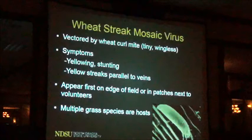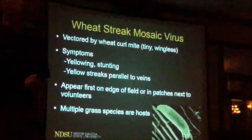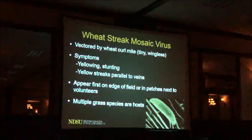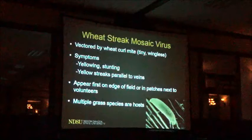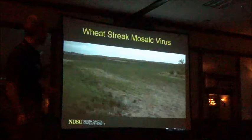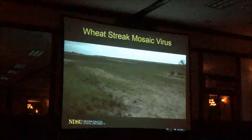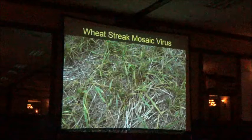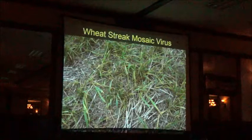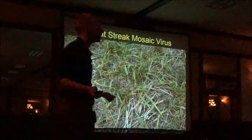The wheat curl mites overwinter in the crown of perennial grasses and also winter wheat. Multiple grass species are hosts, and all major cereal crops can be hosts, but wheat is the most susceptible. Here's a photo showing yellowing starting from a field edge and moving across the field. If you blow up those plants, you see the streaking, stunting—all coming into play. The sooner you start seeing that, the more yield loss you can expect, because the virus is replicating within the host tissue.